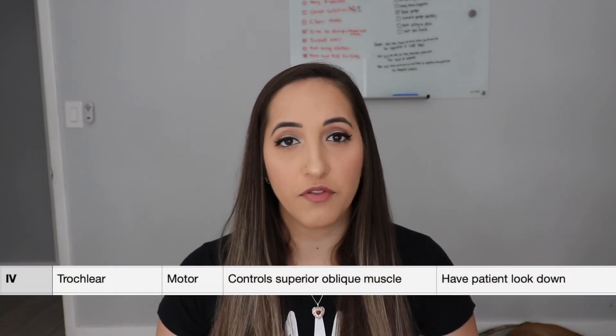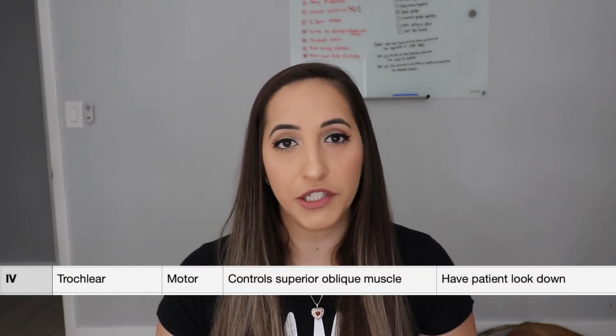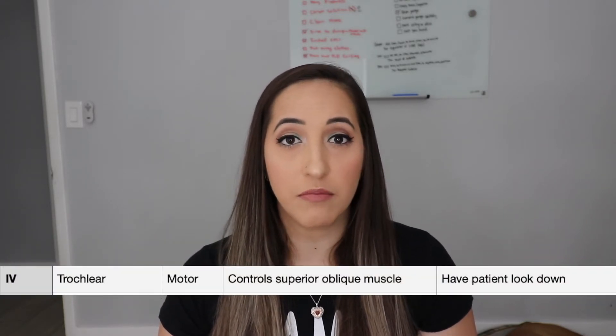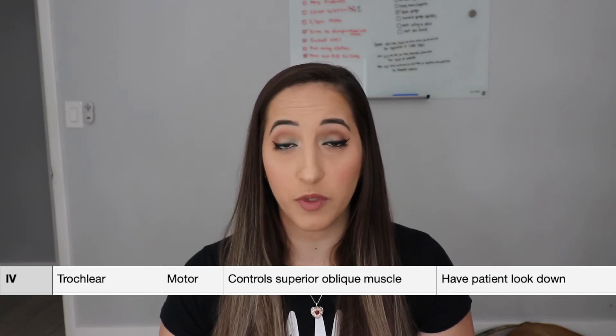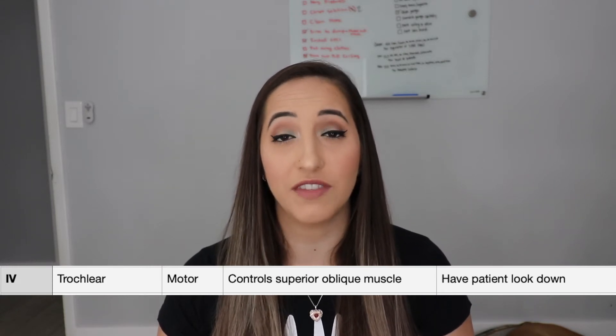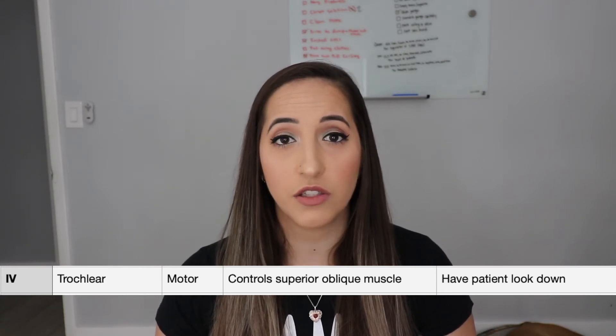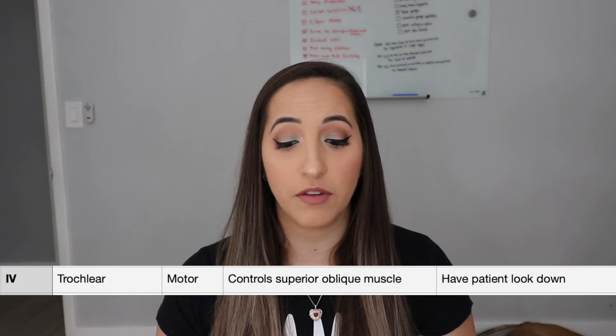Cranial nerve number four is the trochlear nerve. It is a motor nerve. It controls the superior oblique muscle of the eye. So what you want to do is have the patient look down.